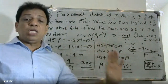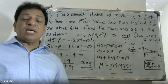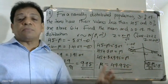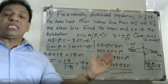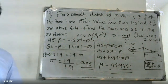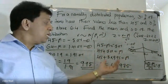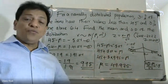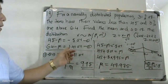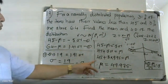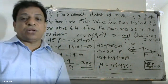In summary, as the problem involves a normally distributed population, we used the standardization z = (X - μ)/σ and converted the given probabilities using the standard normal table. Solving the two simultaneous equations gives us: μ = 49.975 and σ = 9.95.